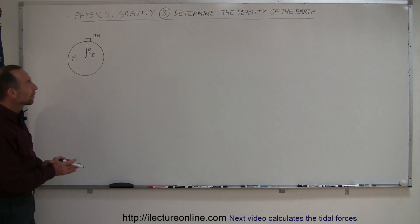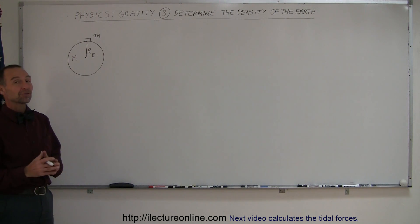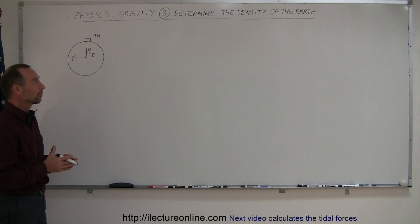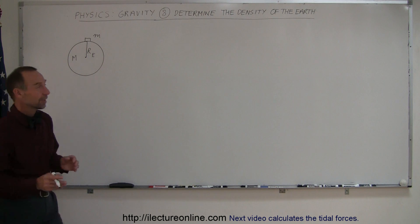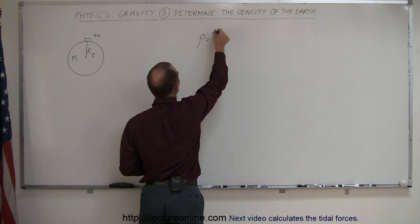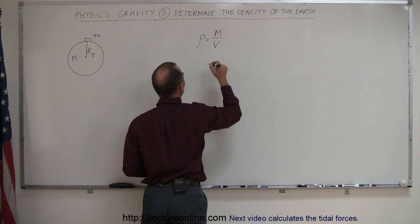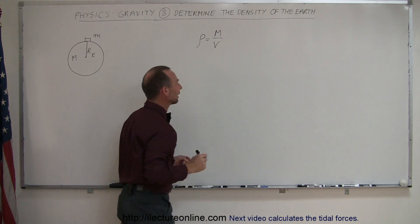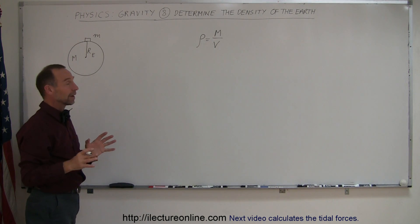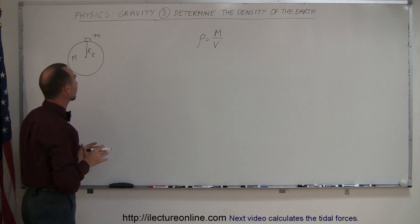Welcome to Electron Online. Here we're going to take a closer look at how we measure the mass and the density of the Earth. The density of any object is simply equal to the ratio of the mass divided by its volume. Let's first figure out how they calculated the mass.